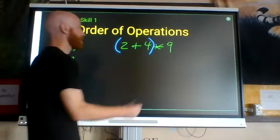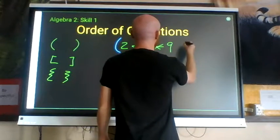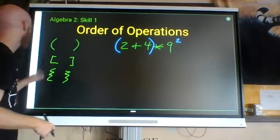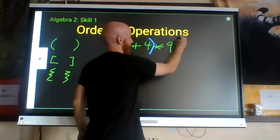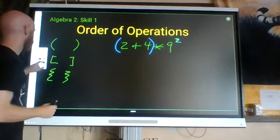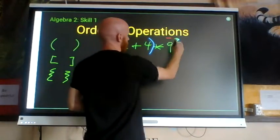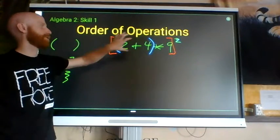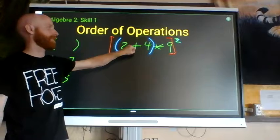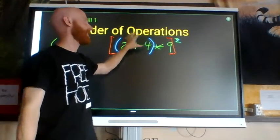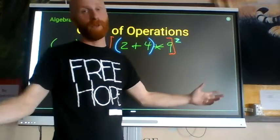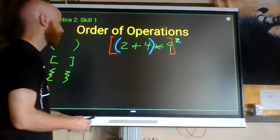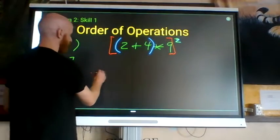If there are multiple sets of parentheses, one inside of another, we work from the farthest inside and work our way out. So you would do 2 plus 4 to get 6, then 6 times 9 to get 54, then all of that to the 4th-squared power — a really big number. Order of operations also involves other grouping symbols, including fraction bars.